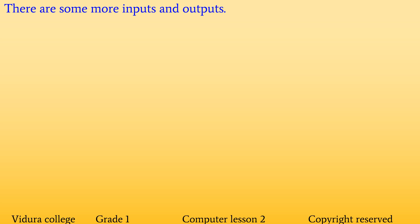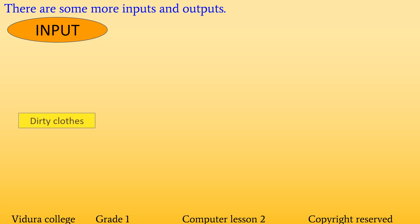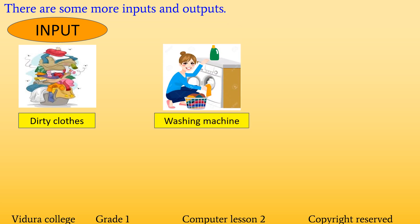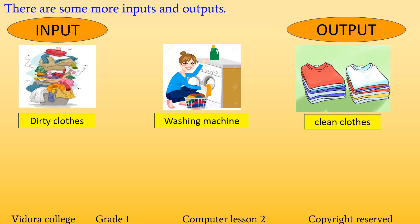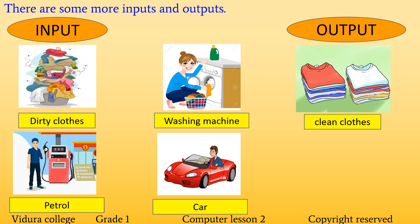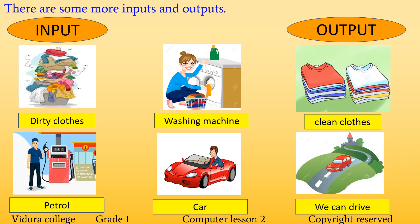Here are some more input and output examples. Dirty clothes — I want to wash these dirty clothes. What do I need? A washing machine! The washing machine starts to process and we get the output as clean clothes. Next, we have petrol. What can I do with petrol? Who needs petrol? Vehicles! Vehicles run by processing petrol, and the output is that we can drive.